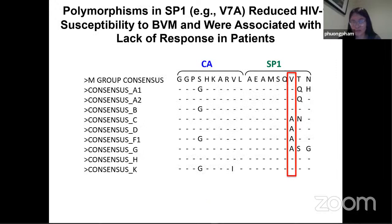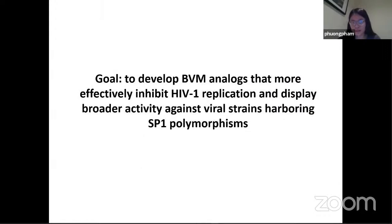As you can see from this figure, highlighted in red is the valine to alanine change at position 7 that caused Bevirimat to be non-responsive to many patients. Most of the mutations that arose were all within the capsid SP1 region. Our goal in the lab was to develop Bevirimat analogs that would more effectively inhibit HIV-1 replication, but would also display broader activity against different virus strains that possess this SP1 polymorphism.